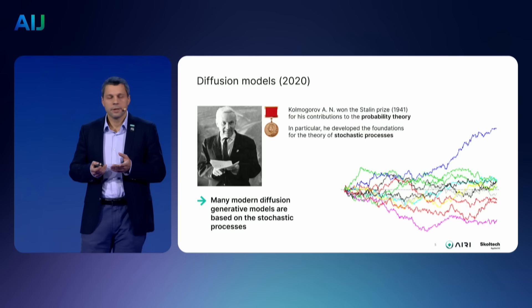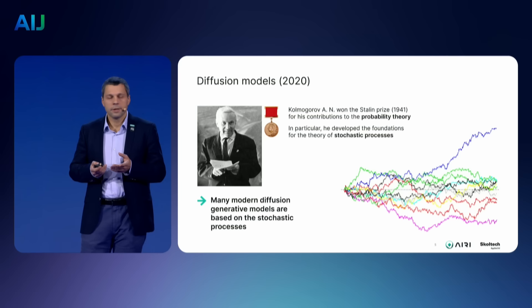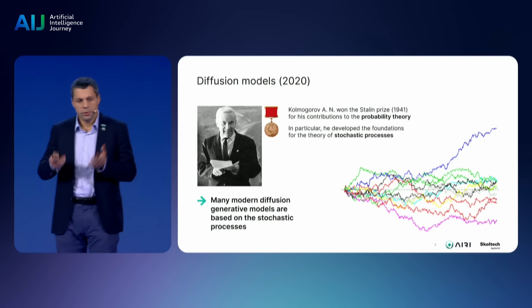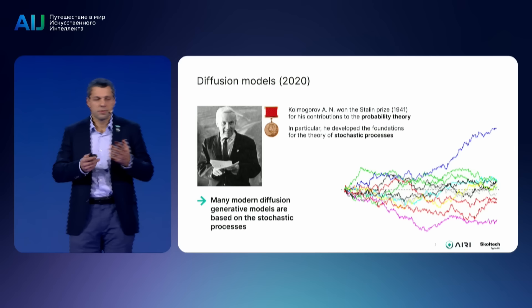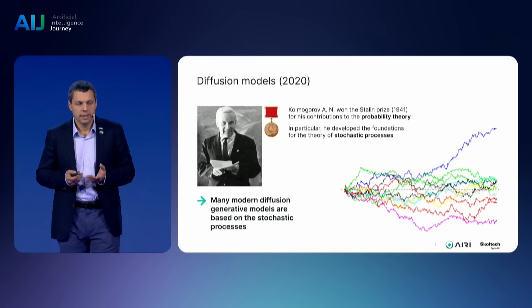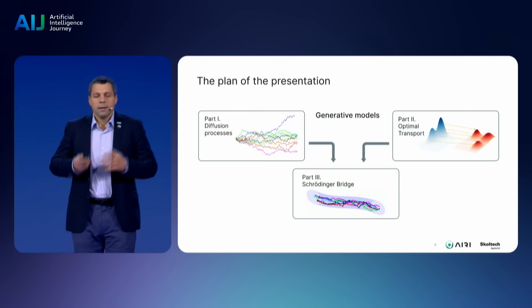Behind all these results there is a lot of fundamental tools and theories, which were first put forward by our compatriot, a great mathematician of the 20th century, Andrei Kolmogorov. Today in my presentation I want to talk about the relations between different GAN models, their principles, and how it all works.